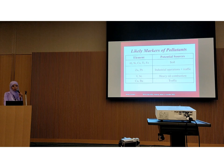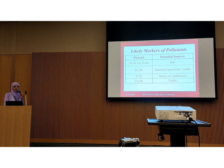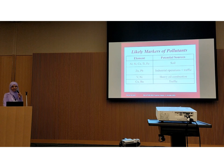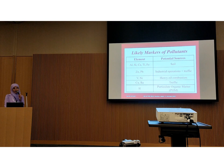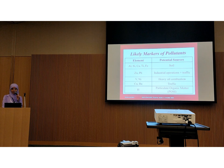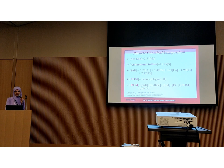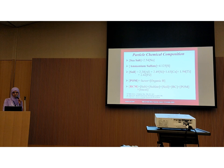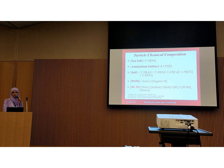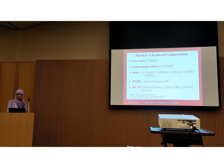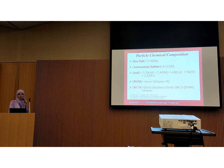We relate elements like aluminium, silicon, calcium, titanium, and iron to soil; zinc and lead to traffic; vanadium and nickel to heavy oil combustion; and barium and copper to traffic. As we combined PESA in this study, we also consider hydrogen as a marker of particulate organic matter. Using the elemental concentrations of these elements one can calculate the chemical composition of the particulate matter, which we did using the following equations. These equations are available in the literature and are based on stoichiometric ratios of these elements in the relevant compounds — we calculated sea salt, ammonium sulfate, soil, and organic matter, then checked our reconstructed mass.